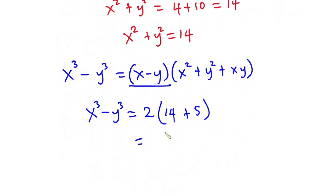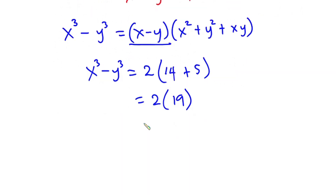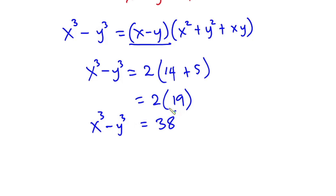Now we have 2 times 19, so 2 times 19 is 38. This means that x to the 3rd power minus y to the 3rd power is equal to 38.